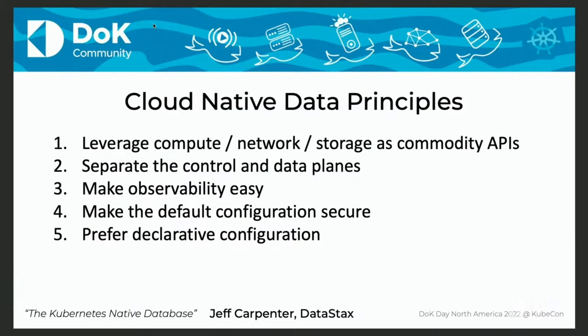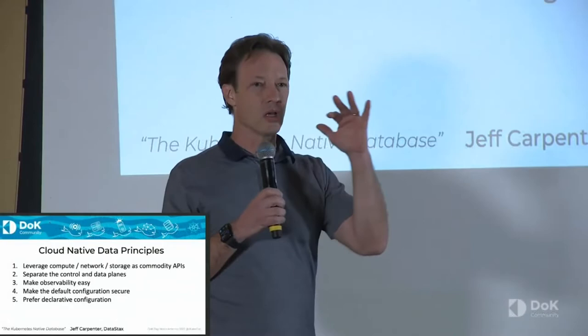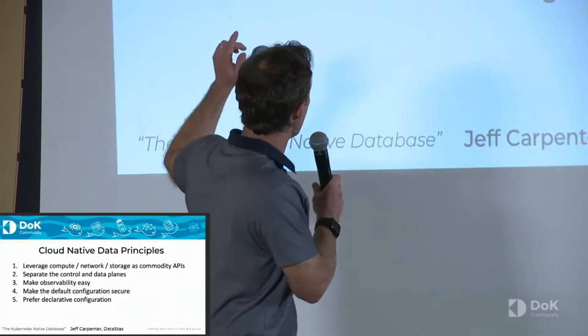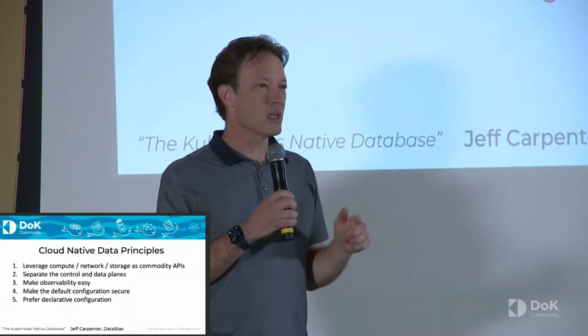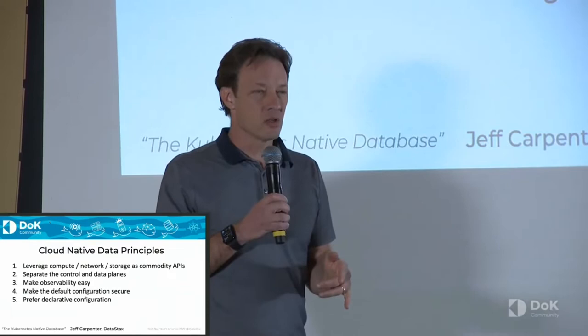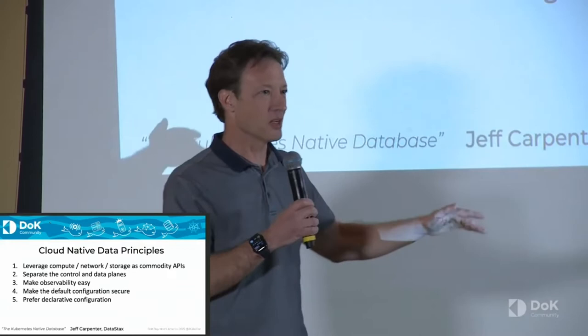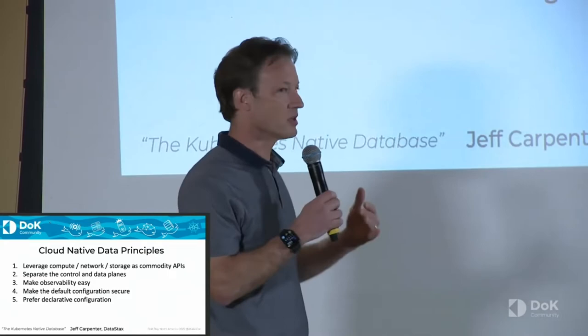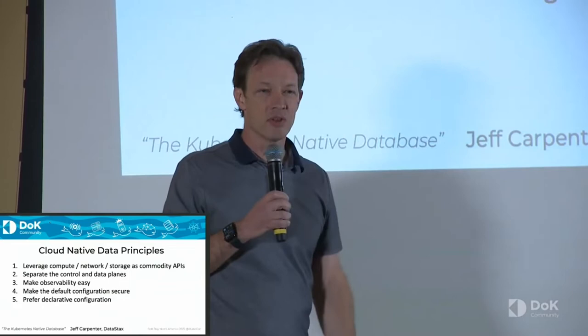One of the things we do in the book is take the CNCF definition of cloud native and project it into the world of data infrastructure. We derived five points that a cloud native database or any cloud native data infrastructure needs to embody. Number one: leverage compute, network, and storage as commodity APIs — no special sauce, use industry standard APIs. Number two: separate the control and data planes — the code managing your database is separate from the database managing your data. Number three: make observability easy — logging, metrics, tracing should all be built-in features.